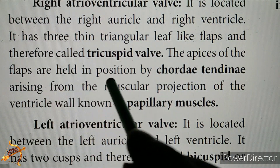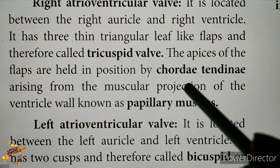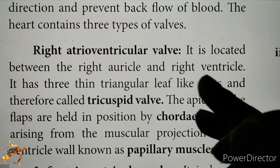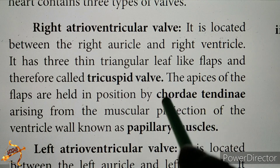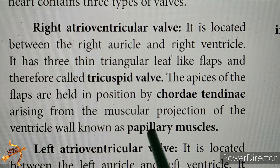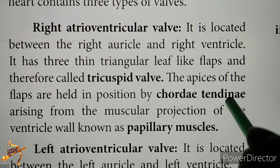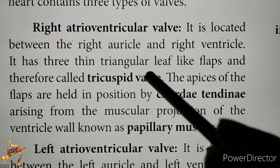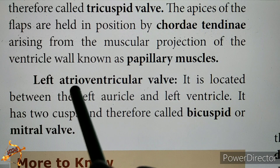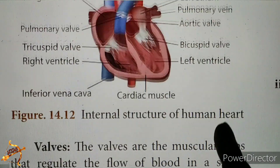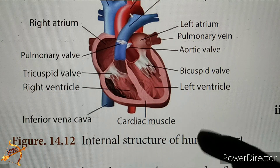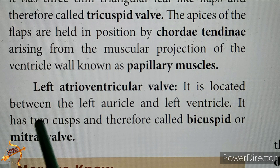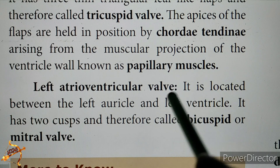The apices of the flaps are held in position by chordae tendineae arising from the muscular projections of the ventricle wall known as papillary muscles. The second valve is the bicuspid valve (also called the mitral valve), located between the left atrium and left ventricle. It has two flaps (cuspids).